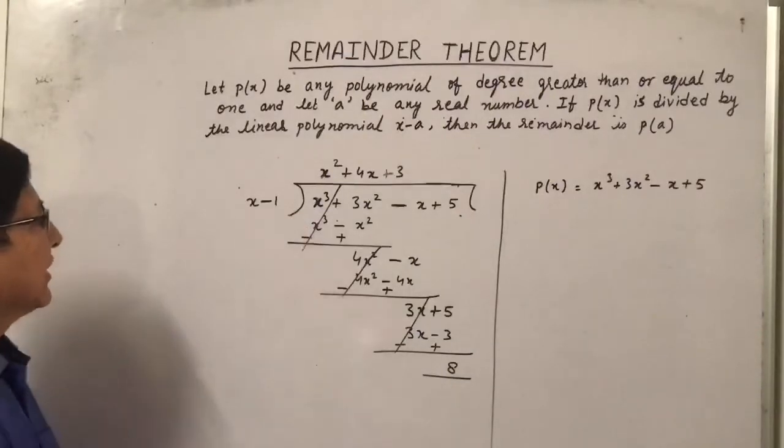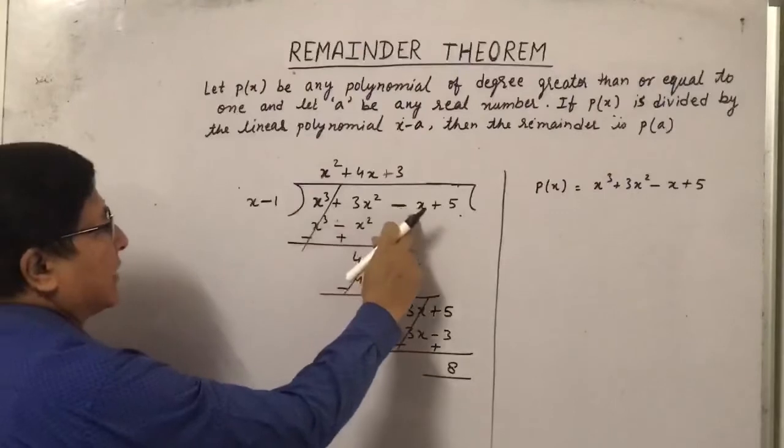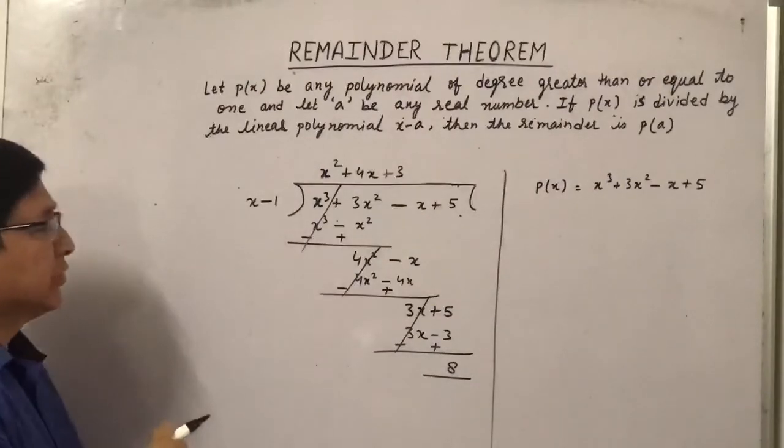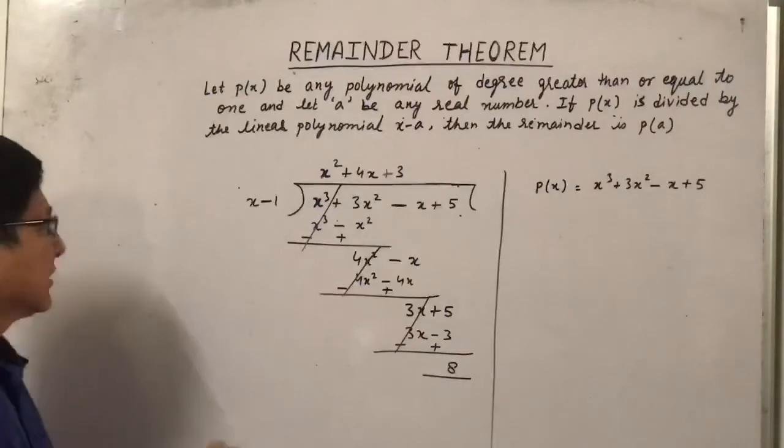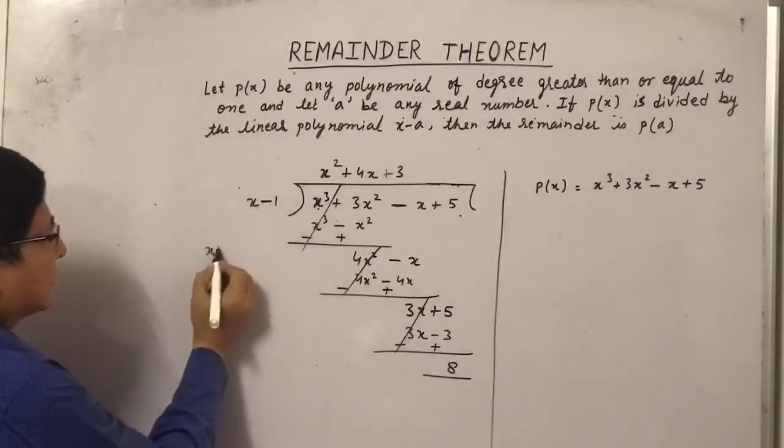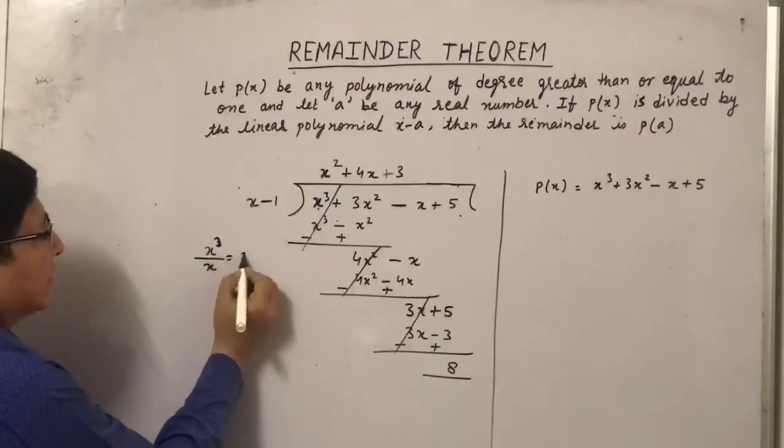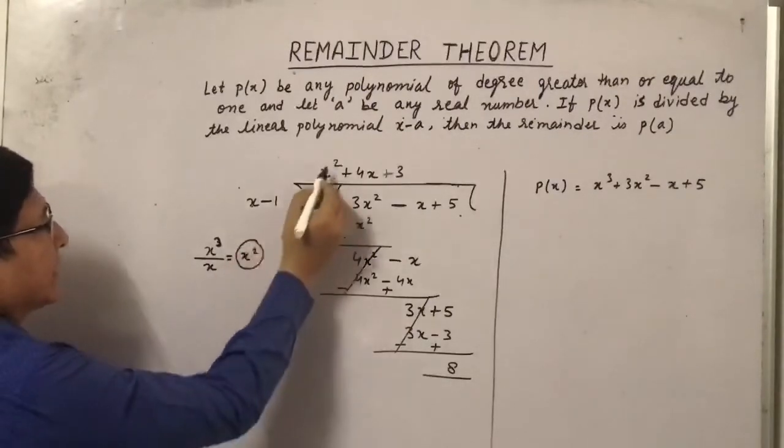Now let us divide this x cube plus 3 x square minus x plus 5 by x minus 1. Now how to divide that we have already done in the 8th class. Now this x cube is divided by x, so that will become x square. So I will write x square here.